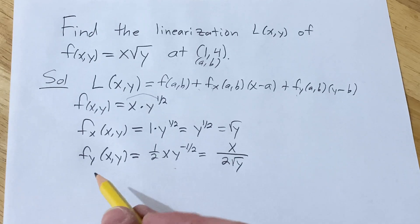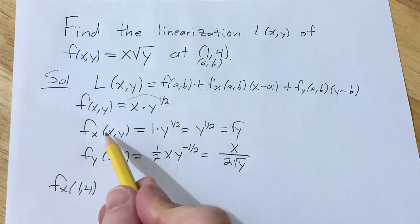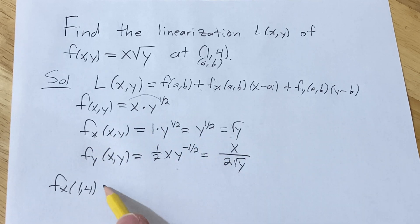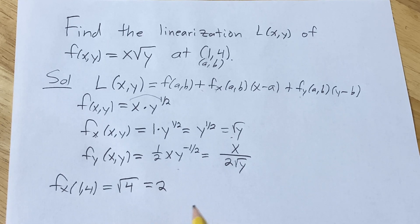Let's plug in some numbers here. So plugging in (1,4) into the partial with respect to x, we get the square root of 4, which is 2. So we get 2 in that case.